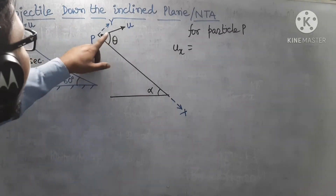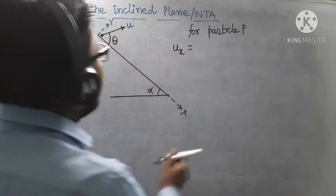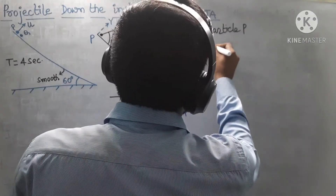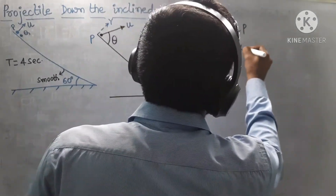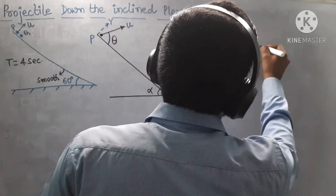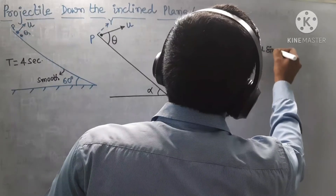So, the x-component of the initial velocity is U cosθ, and the y-component of the initial velocity is U sinθ.